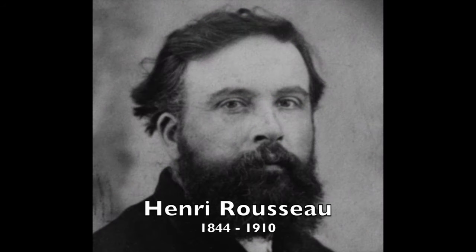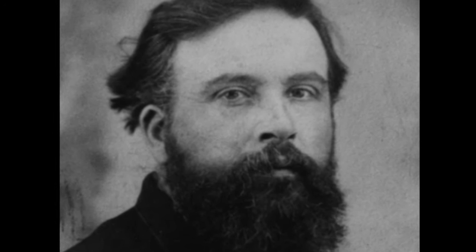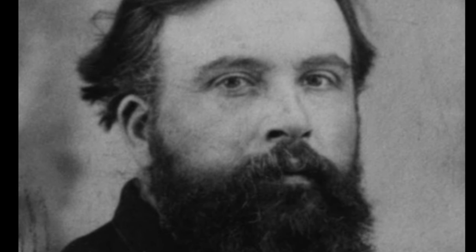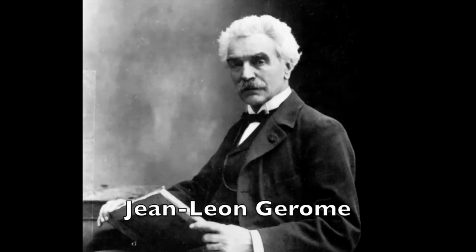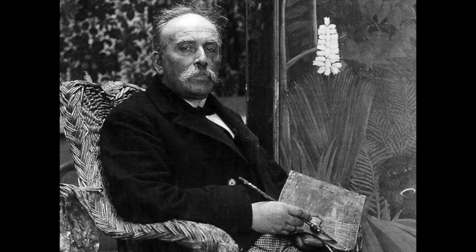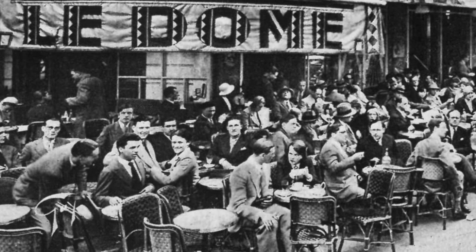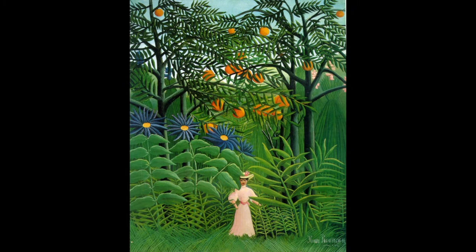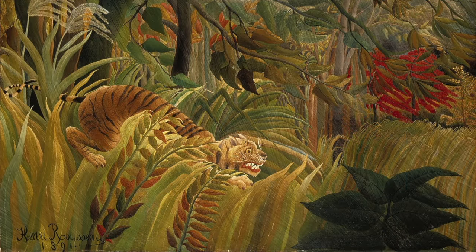Henri Rousseau was a self-taught French artist. Rousseau claimed he had no teacher other than nature, yet he admitted that he received some advice from two established academic painters, Félix-Auguste Clément and Jean-Léon Jérôme. He learned about sophisticated painting by frequenting the cafes and learning from the other artists of Paris. Rousseau's paintings clearly had the rigidness of primitive work, yet what he lost with stiff form was made up for with sophisticated composition, powerful and sophisticated color, and stunning and well-orchestrated texture.